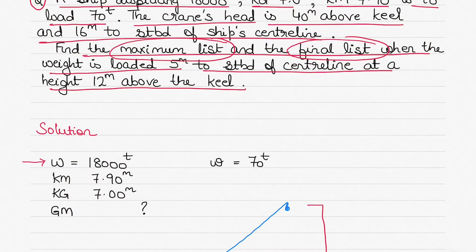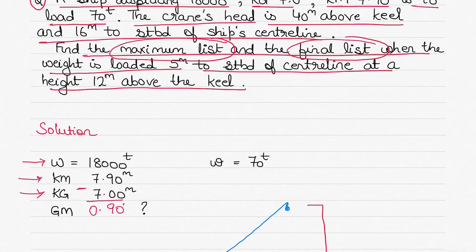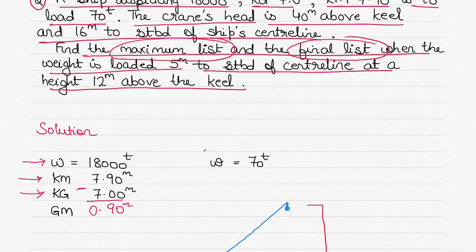Let's summarize what is given to us. We have displacement W = 18,000 tons, KM = 7.9 meters, KG = 7 meters. So the initial GM will be KM minus KG, which equals 0.9 meters. That will be our initial GM.